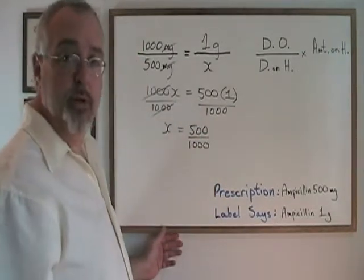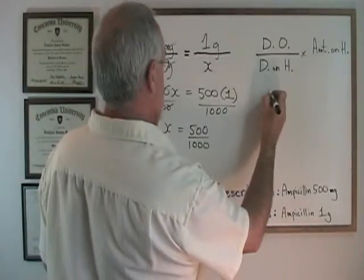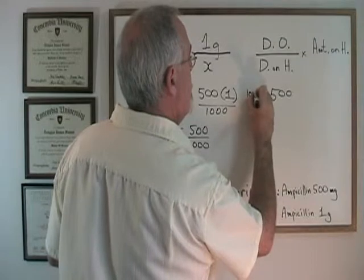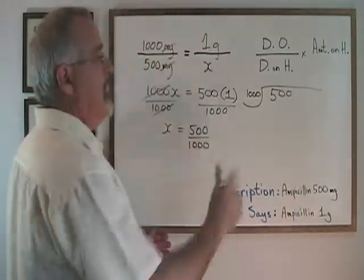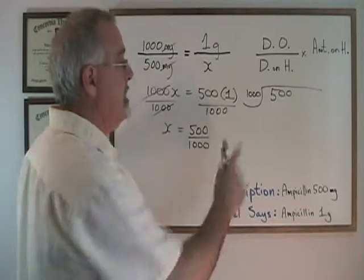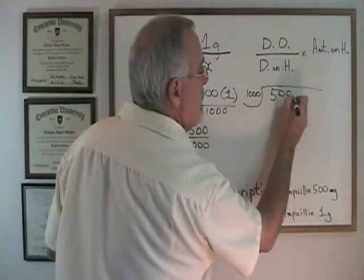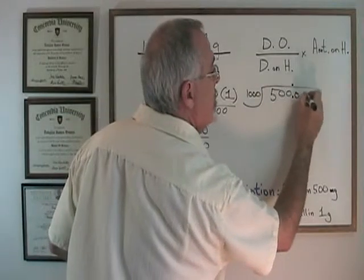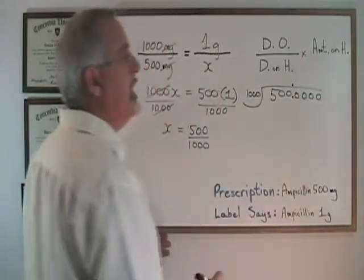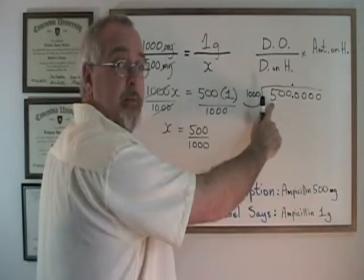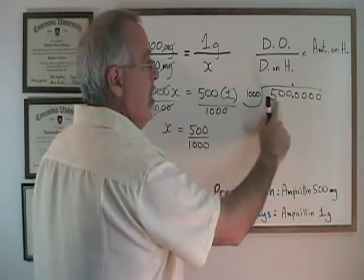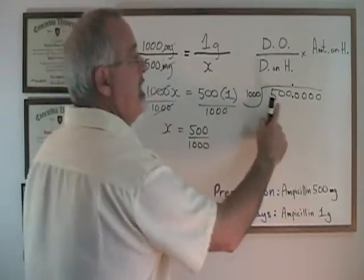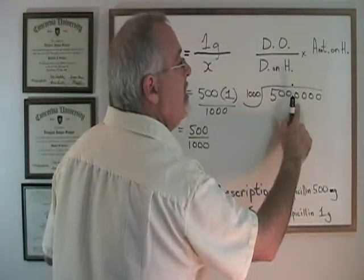Now I have to do a division. 500 divided by 1000. My decimal is already in the right place here. So I'm putting a decimal here and right above, and then I'm putting a bunch of extra zeros. 1000 does not fit into 5. 1000 does not fit into 50. And 1000 does not fit into 500. But 1000 does fit into 5000 five times.